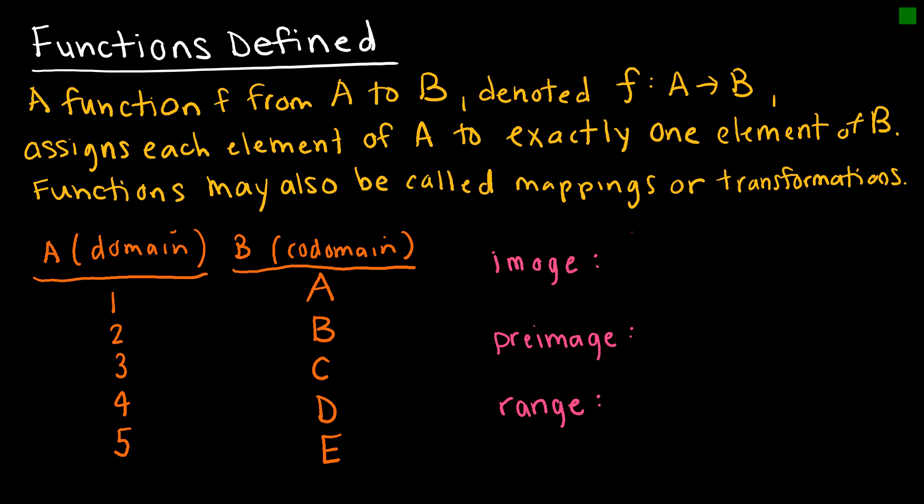A function f from set A to B, and notice how we denote that function, assigns each element of A to exactly one element of B. So every element of A must be mapped to some element of B. This would be considered a function. You might also hear of a function being called a mapping or transformation, but mostly we just call them functions.